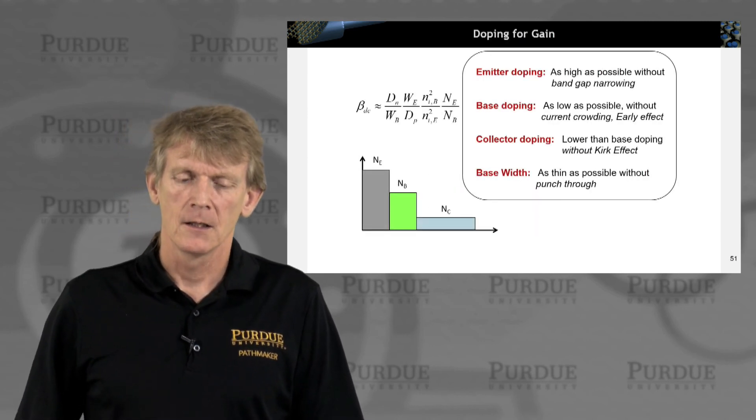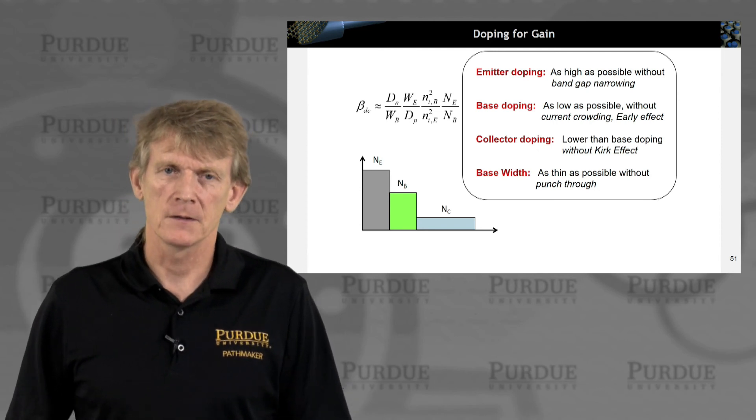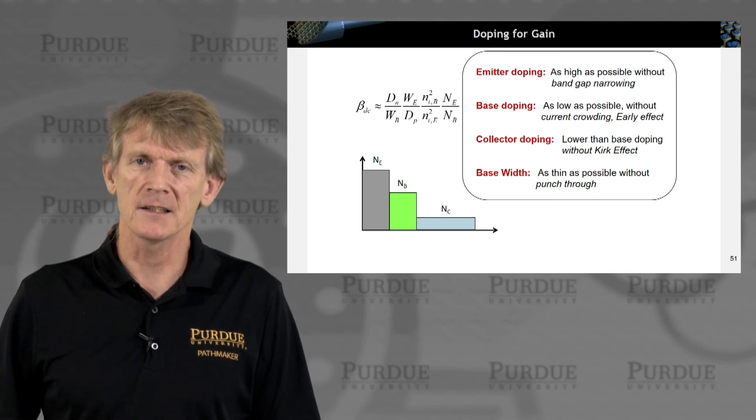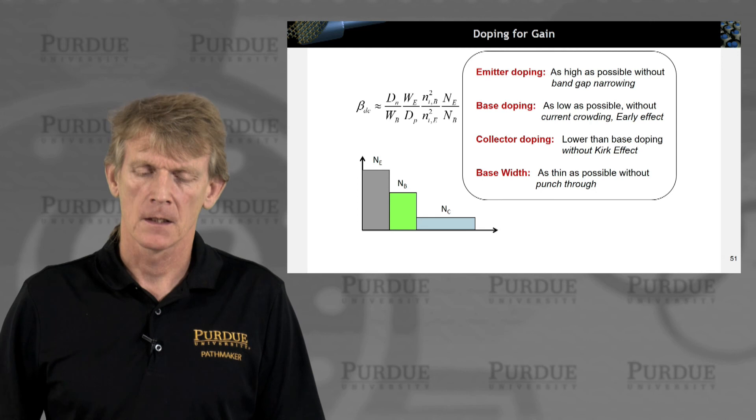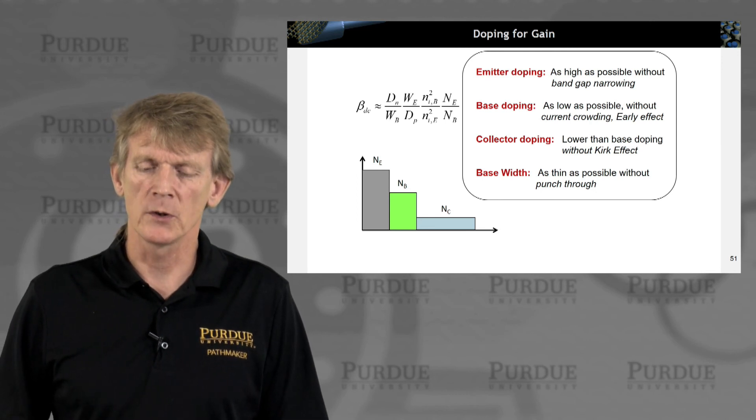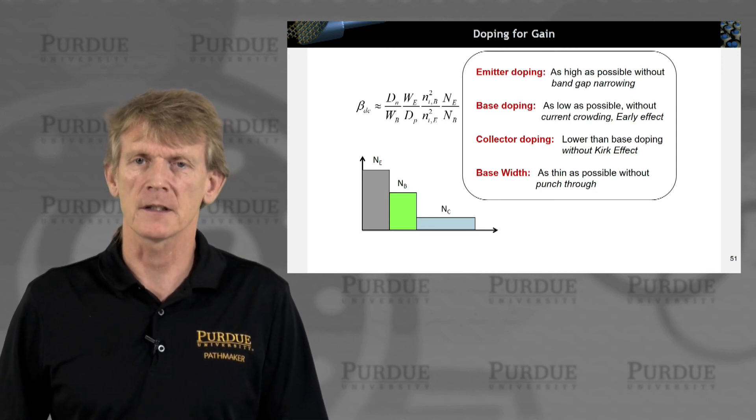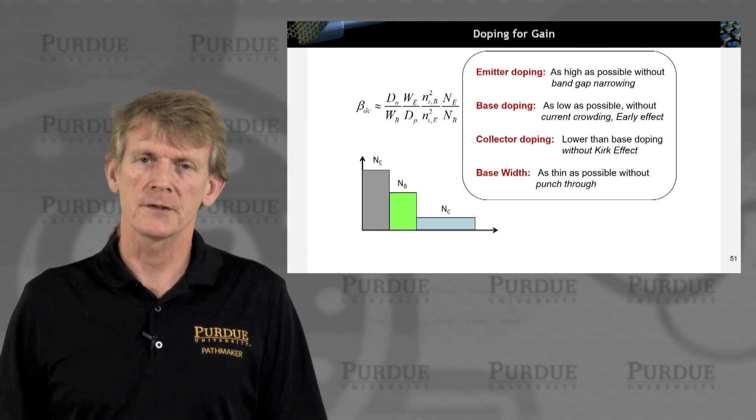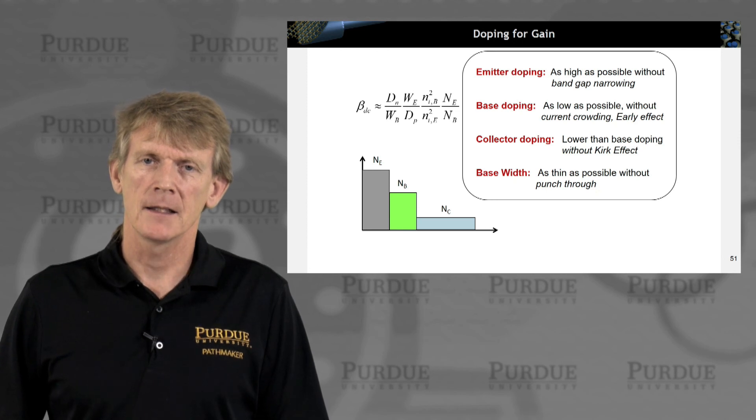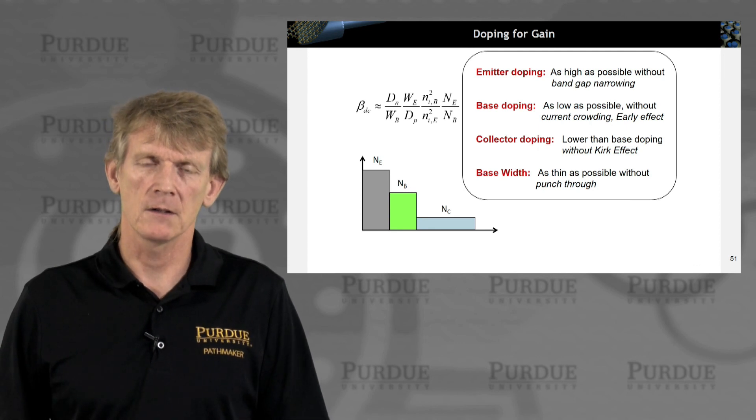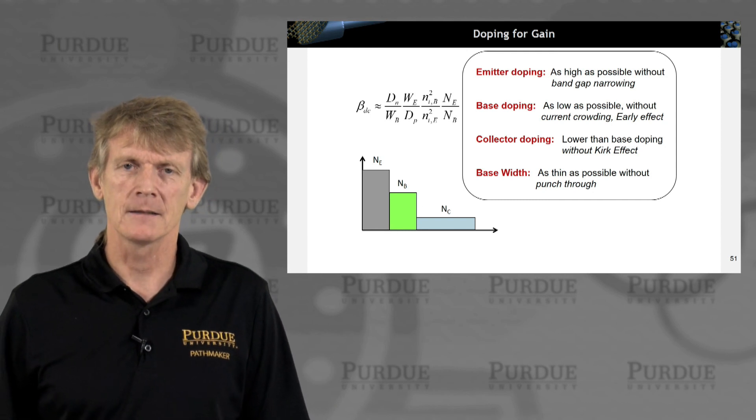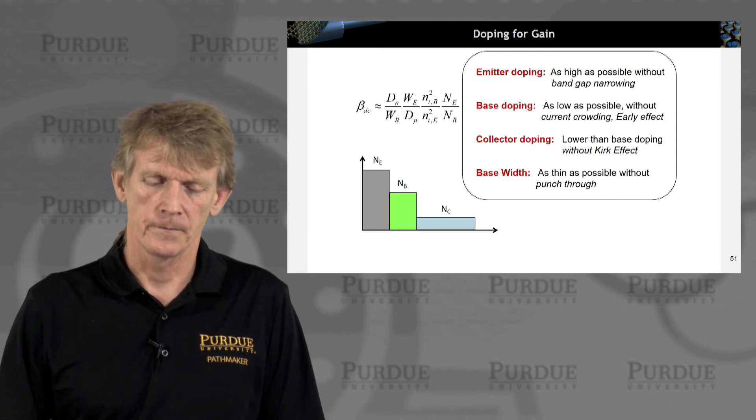So we've gone through a variety of techniques. Emitter doping, bring it as high as possible without band gap narrowing. Base doping, keep it as low as possible without current crowding and the Early effect. Collector doping, lower it as much as you can without the Kirk effect. And base width, make it as thin as possible without punch-through. So those we can devise as recipes here, but you can't do it blindly, and you have to be careful.